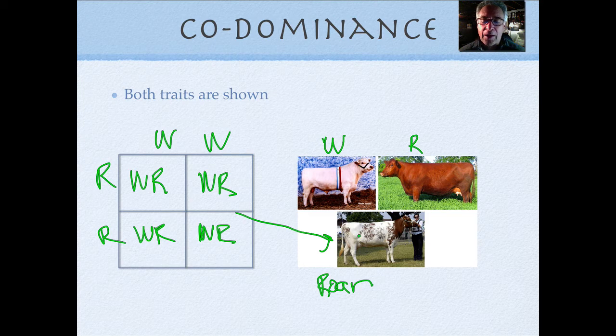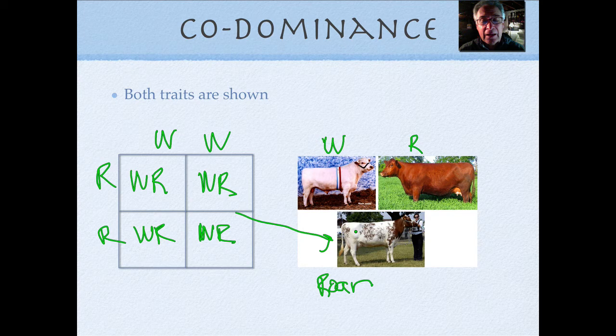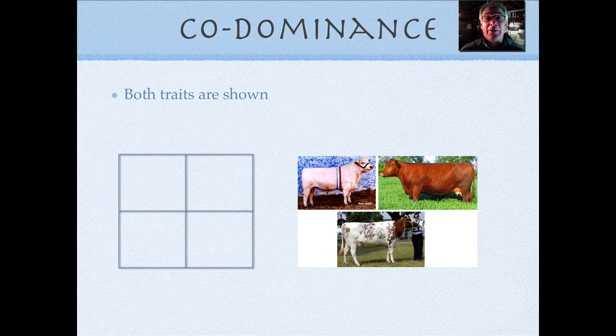A little bit of red, a little bit of white. There's no blending like a pink. What you get is both colors coming out to kind of show their particular trait. So one's not recessive. They're both dominant, so they call it co-dominant. So that's how that works.